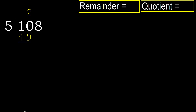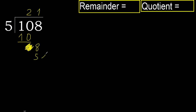Ok, subtract. 10 minus 10 is 0. Next, bring down 8. 5 multiplied by 2 is 10, is greater. Multiplied by 1 is 5, is not greater.